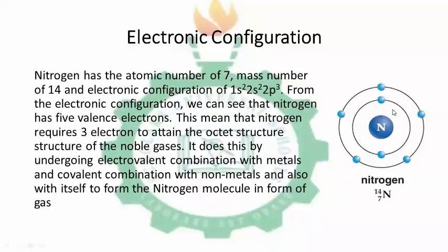This means that nitrogen requires 3 electrons to attain the octet structure of the noble gases. Nitrogen does this by undergoing ionic combination with metals, and also covalent combination with non-metals, and also covalent combination with itself — that means a nitrogen atom combining with another nitrogen atom to form the nitrogen molecule as N2 gas.